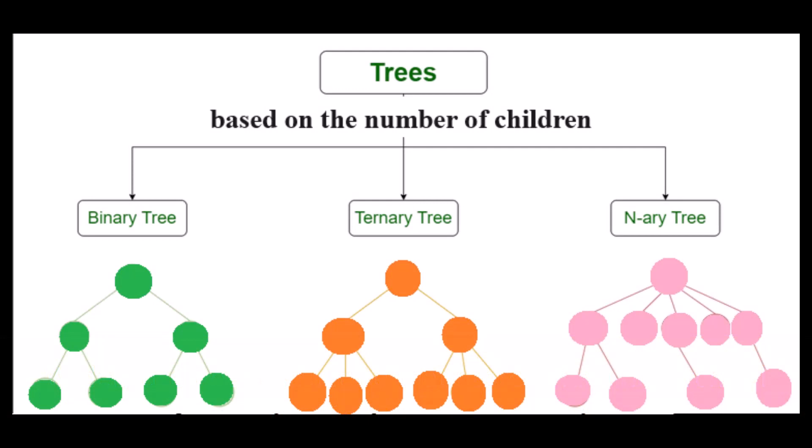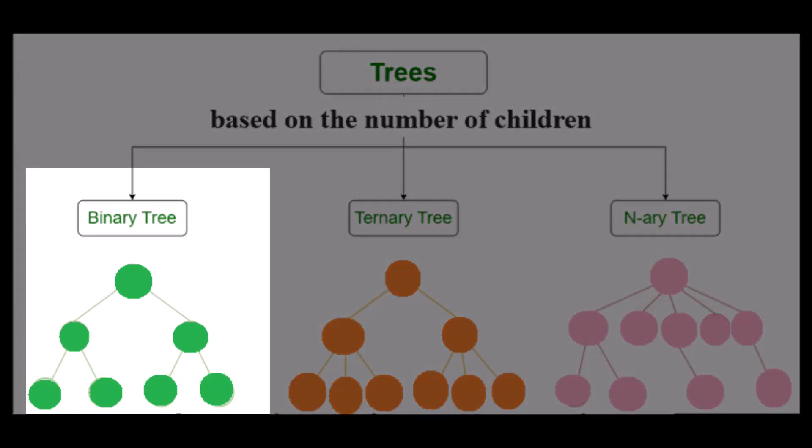We have three types of tree data structures. We have binary tree in which each node can have a maximum of two children linked to it. Some examples are complete binary tree or balanced binary trees.